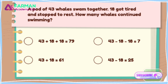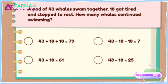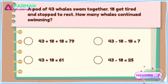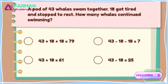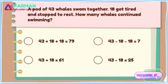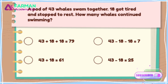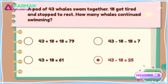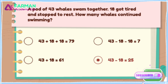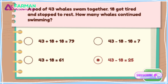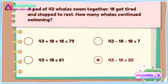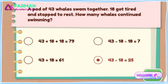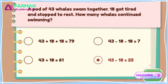Let's solve one more. Read the word problem. Please pick the correct equation and answer. Super! 43 minus 18 is 25. 25 whales continued swimming. Thanks for watching!